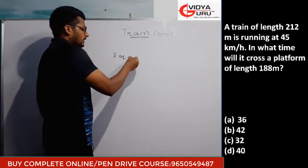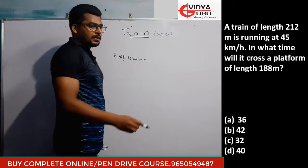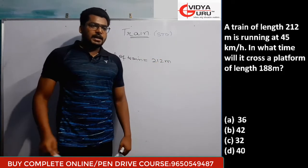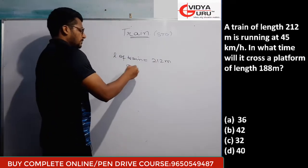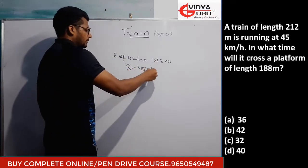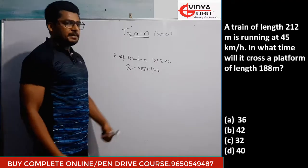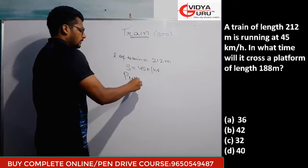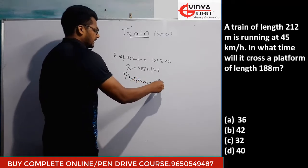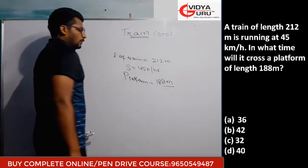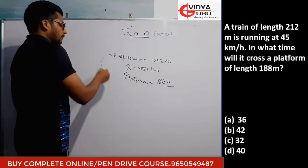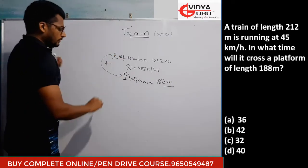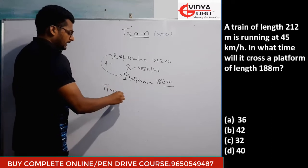A train of length 212 meters is running at a speed of 45 kilometers per hour. In how much time will it cross a platform of length 188 meters? As I have told you, if a train crosses a platform, it will cross its own length plus the platform length. We need to find the time: time = distance / speed.